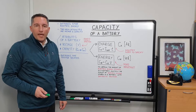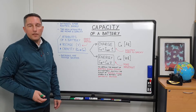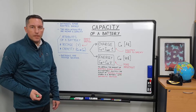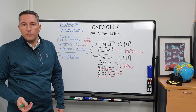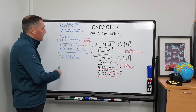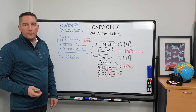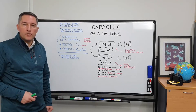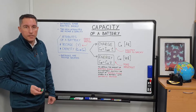Now let's have a look at the capacity of a battery. We use batteries to store electric energy. Batteries normally have two main attributes: voltage and capacity. Batteries provide electric voltage to circuits where they're installed, so they serve as voltage sources.